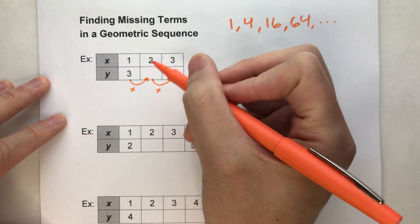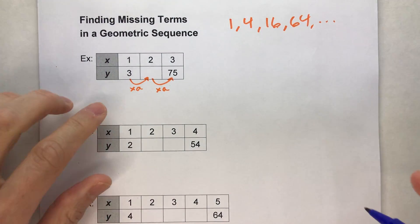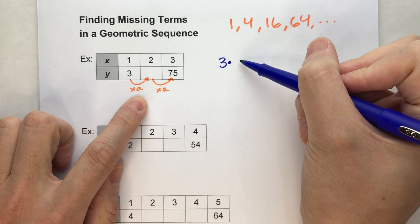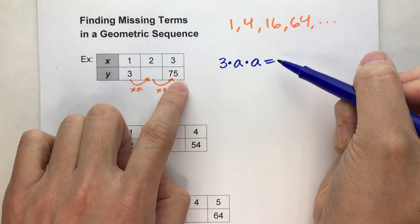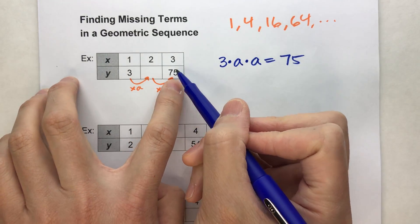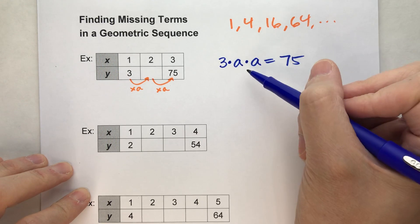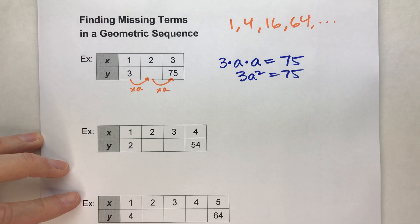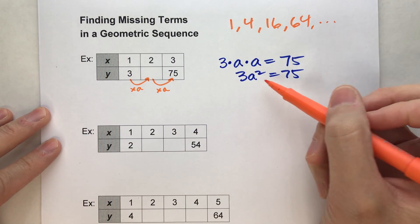We can set up an algebra equation to figure this out. Let's say we're repeatedly multiplying by a variable I'll call a. We start with 3, multiply by a to get the second term, then multiply by a again to get 75. So 3 times a times a equals 75, and since a times a is a squared, this simplifies to 3a squared equals 75.